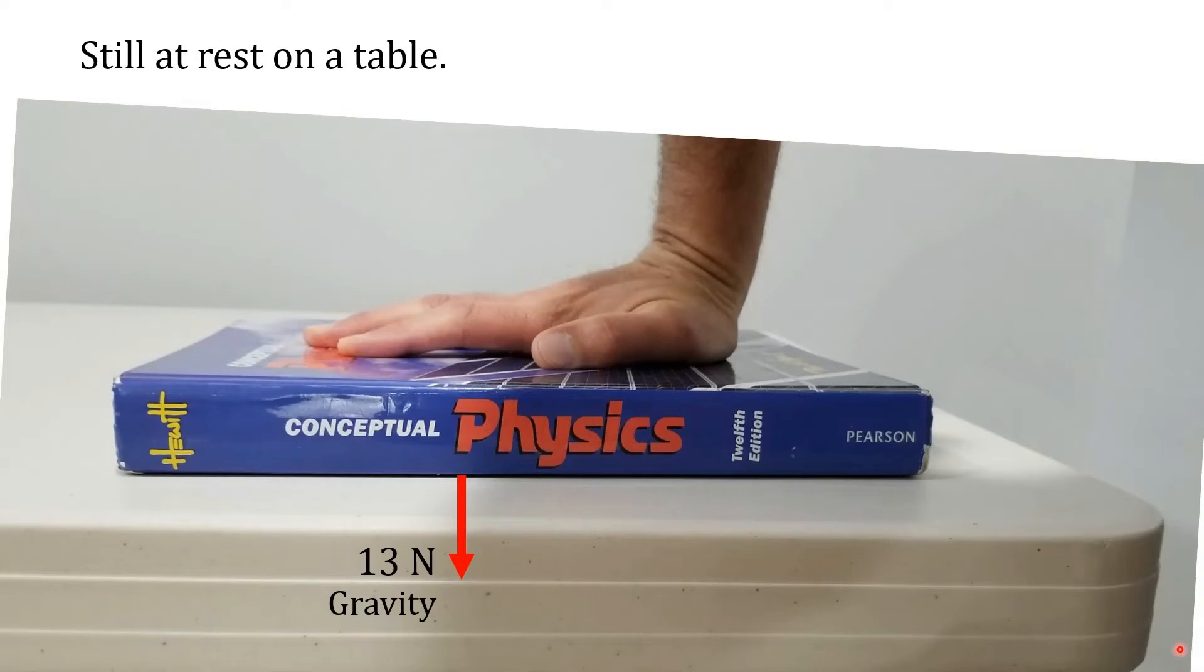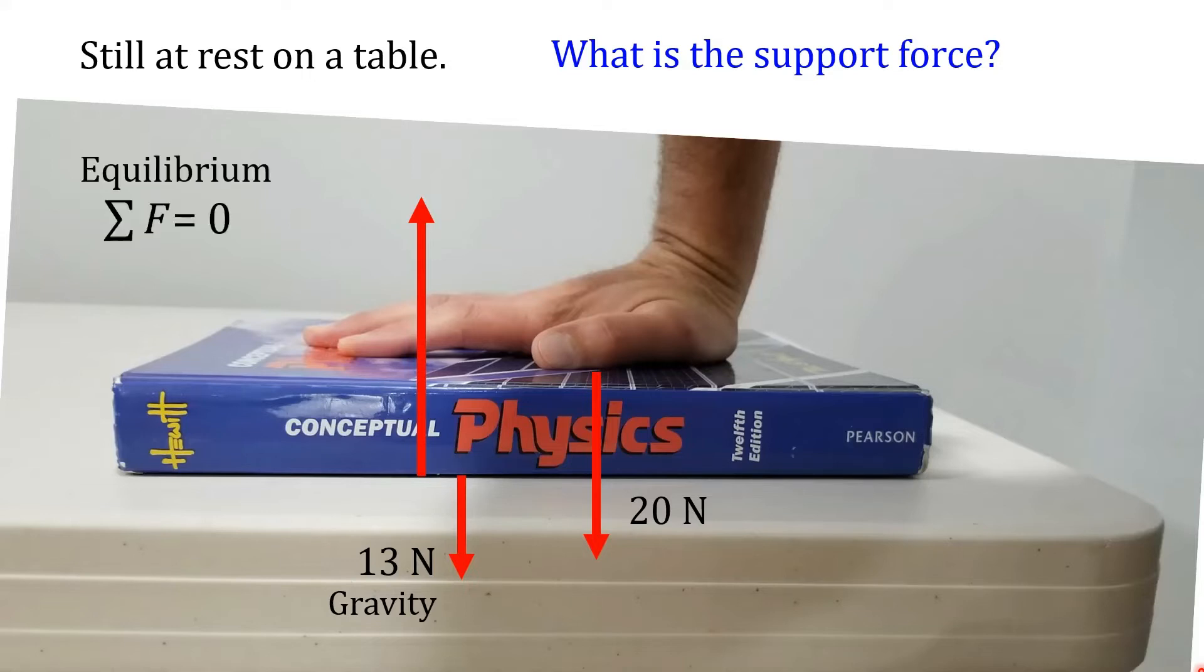I'm going to modify this situation a little bit. We still have weight - book hasn't changed. But now I'm pushing down on the book, and I'm pushing down with about 20 newtons of force. The book must still be supported, otherwise it should be moving down. So there's still a support force. The question I want to ask is: what is the support force? Nothing's changed concerning equilibrium - the net force still has to be zero. Here we have two downward forces and one upward force, so everything's got to add together to be zero. If we have two downward forces totaling 33 newtons, then the upward force has to be 33 newtons as well.